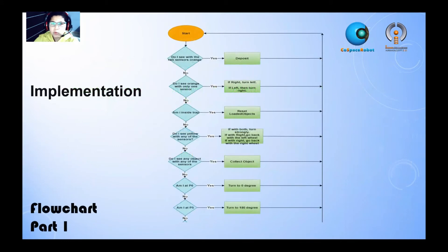Implementation. Here's my flowchart. Do I see orange with the two sensors? If yes, go to deposit. If no, do I see orange with one of the sensors? If yes, if I see with the right, turn left. If I see with the left, turn right. And that will increase the chance of depositing.